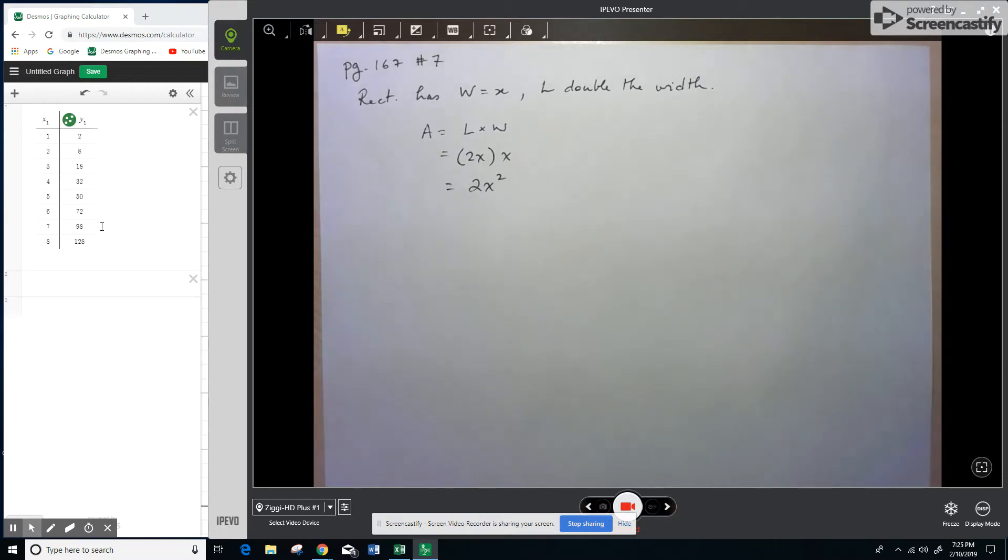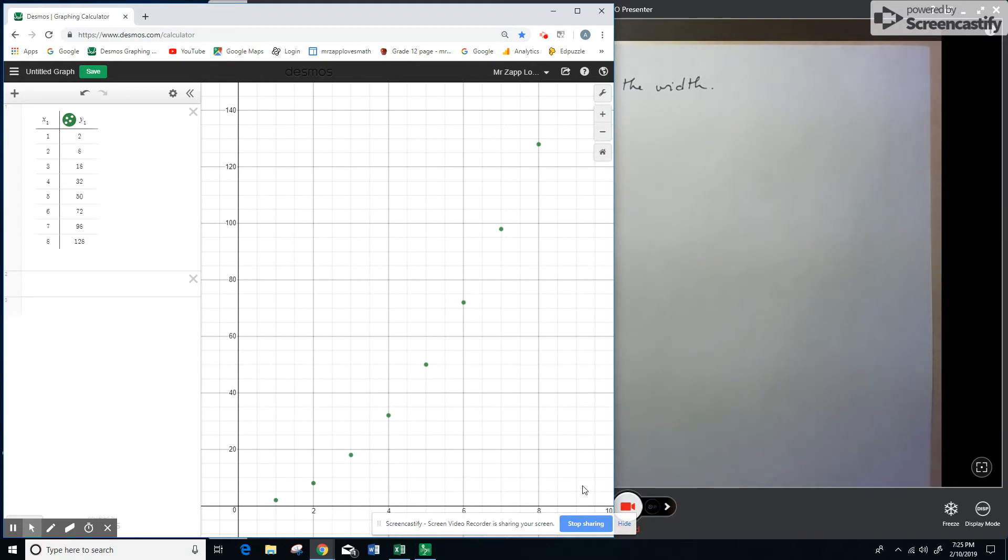And then if we actually go to the graph, we can see that the points do not form a straight line. So the graphical justification is that it does not form a straight line, which you'd need to have if it was a linear relationship.